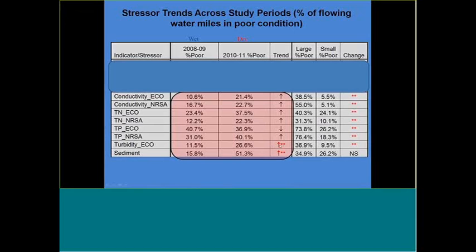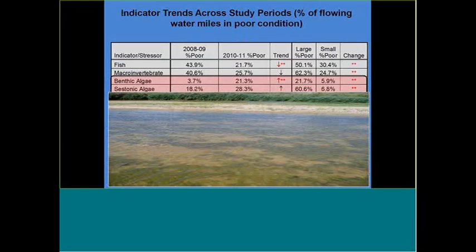Two of those stressors were statistically significant: turbidity and sediment. Looking at condition indicators — again, percent of flowing waters in poor condition, comparing dry years 2010-2011 to wet years 2008-2009 — I specifically want to look at the algae trends. We see a significant upward trend from 2008-2009 to 2010-2011 in both benthic or substrate algae and cystonic or water column algae.